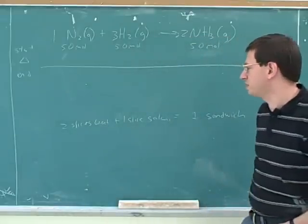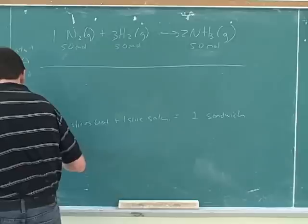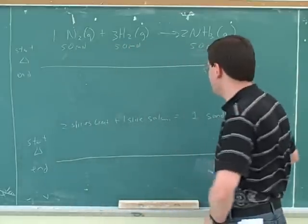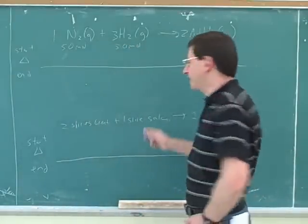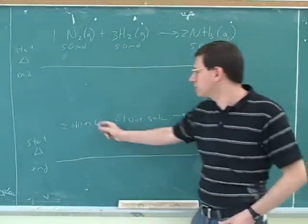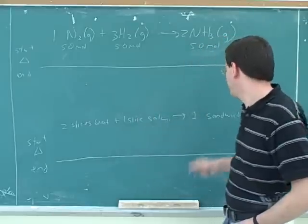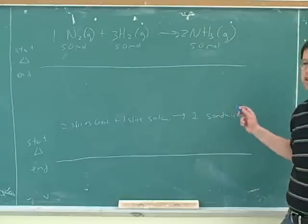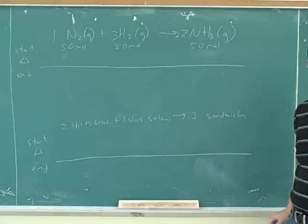Maybe it helps to think about the sandwich equation. So this is a true equation for how to make a simple sandwich, right? You can take two slices of bread and one slice of salami and that will give you one sandwich. So let's say these are the real sandwiches that I always make for lunch. I make these very simple sandwiches.